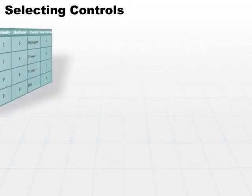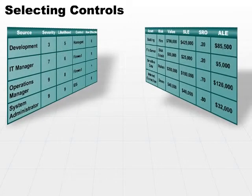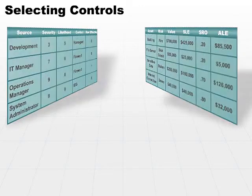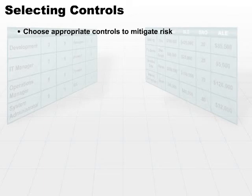So how do we know which controls to select? Once we have done our analysis — we've backed off, we've done our qualitative or our quantitative analysis, and in fact sometimes we do a little of both — we need to choose the appropriate controls to mitigate our risk.